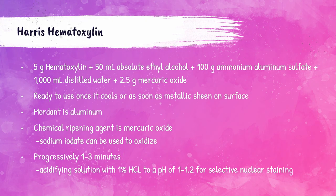Harris hematoxylin is created by dissolving 5 grams of hematoxylin in 50 mL of absolute ethyl alcohol — 20 mL of water may be needed. Then 100 grams of ammonium aluminum sulfate is dissolved in 1000 mL of water. These two solutions are mixed, brought to a boil quickly, then removed from heat. Two and a half grams of mercuric oxide is slowly added, and the solution is boiled for two to three minutes until it becomes dark purple. It is then placed in ice, and once a metallic sheen forms it is ready. Before use it must be filtered and glacial acetic acid must be added to give a final concentration of 4%.